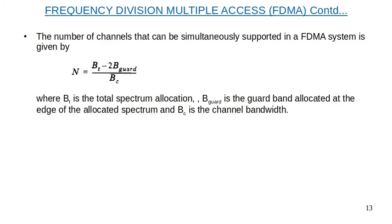The number of channels that can be simultaneously supported in an FDMA system is given by N = (BT − 2·BGuard) / BC, where BT is the total spectrum allocation, BGuard is the guard band allocated at the edge of the allocated spectrum, and BC is the channel bandwidth. We subtract two guard bands from the total spectrum and divide by the channel bandwidth BC to obtain the total number of available channels.